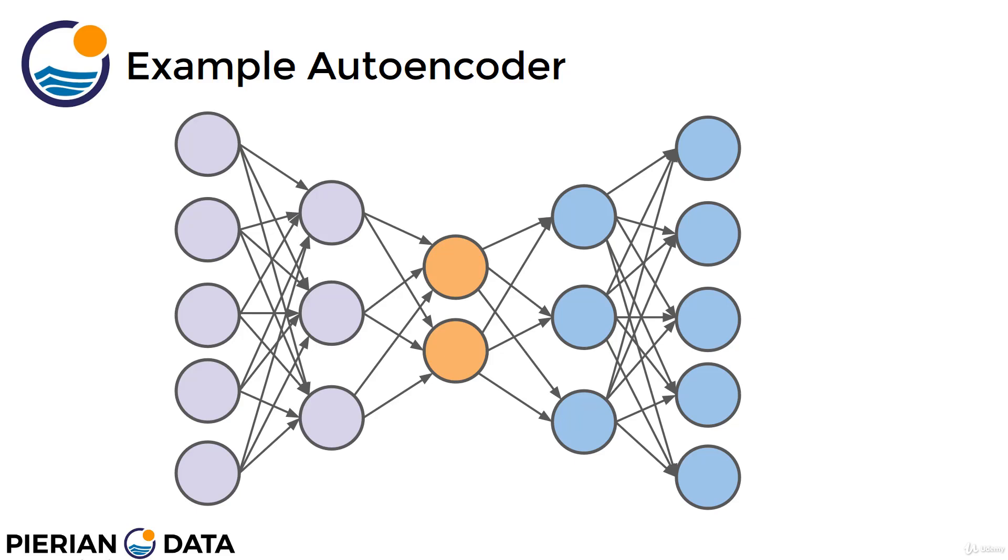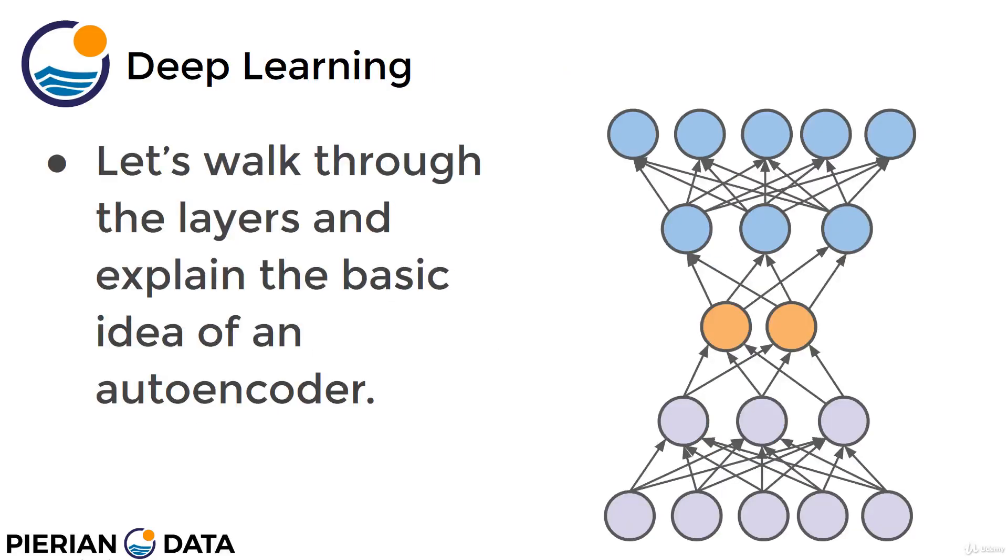And then in the second half of the autoencoder, essentially the decoding part, you expand this back out to equal the same number of neurons that you started with. So we go from five to three to two, and then back out to three to five again. So we start at five and then after going through the entire autoencoder, we actually end up back at five.